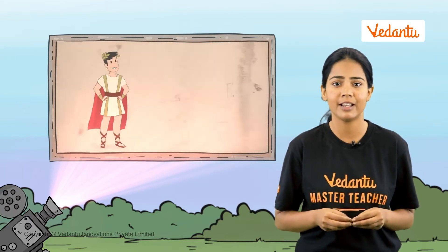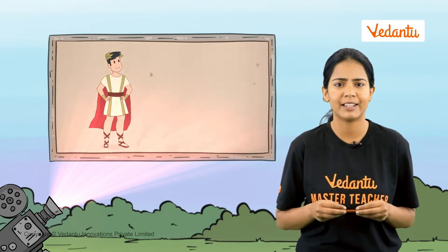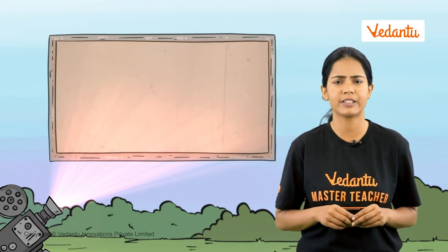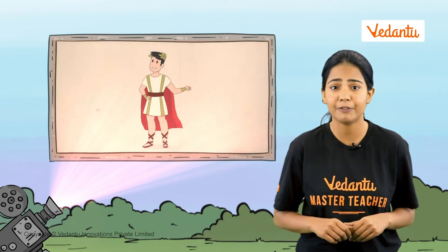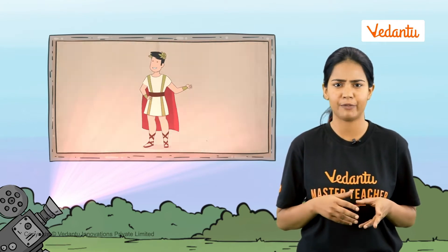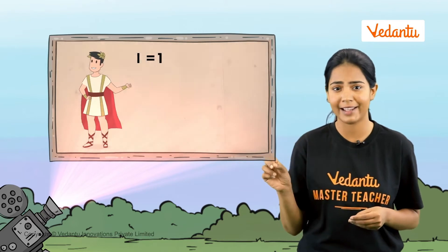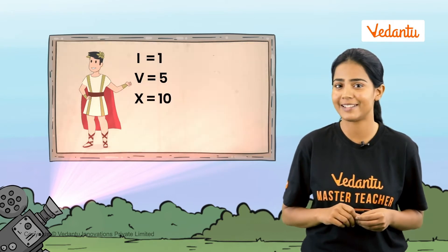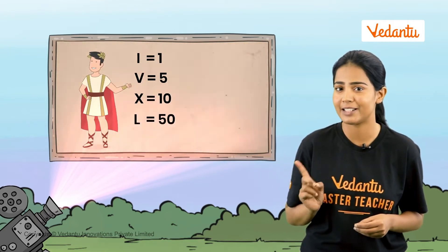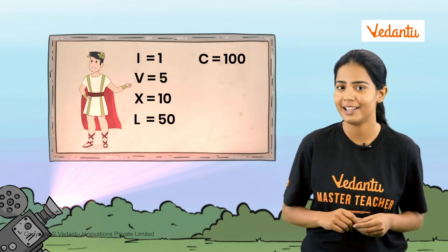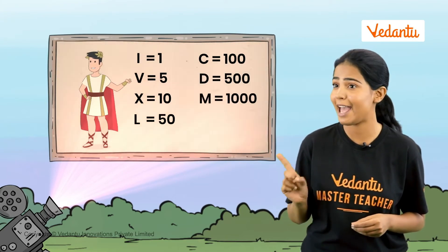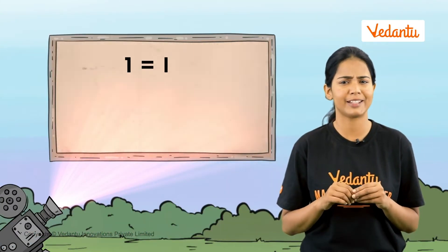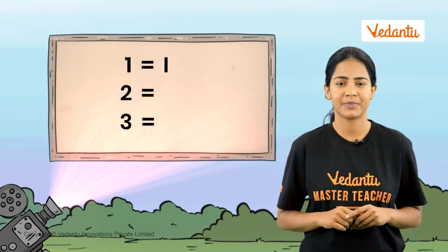As the name suggests, the Roman numeral system was developed by Romans. The Romans used alphabets to represent numbers. Comparing with our present numbers: the letter I represents 1, V represents 5, X represents 10, L represents 50, C represents 100, D represents 500, and M represents 1,000.